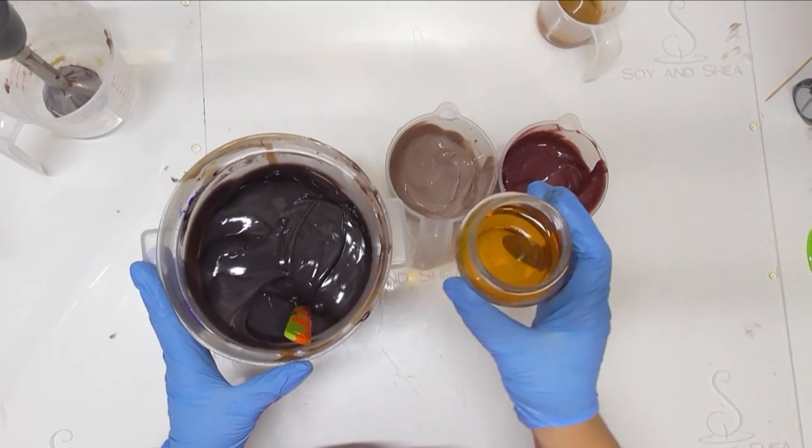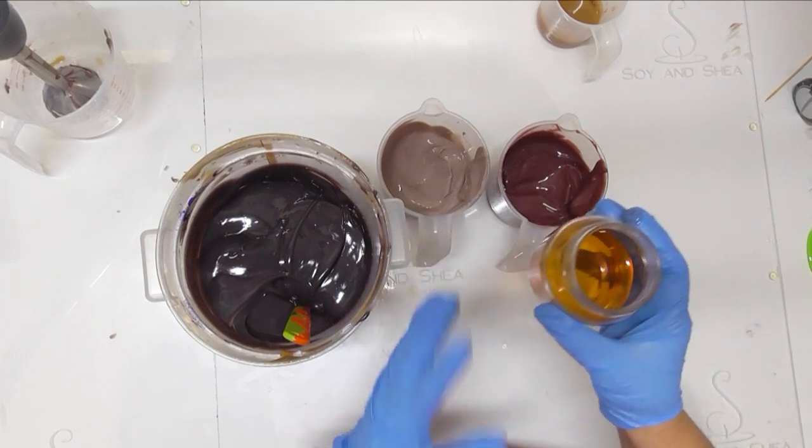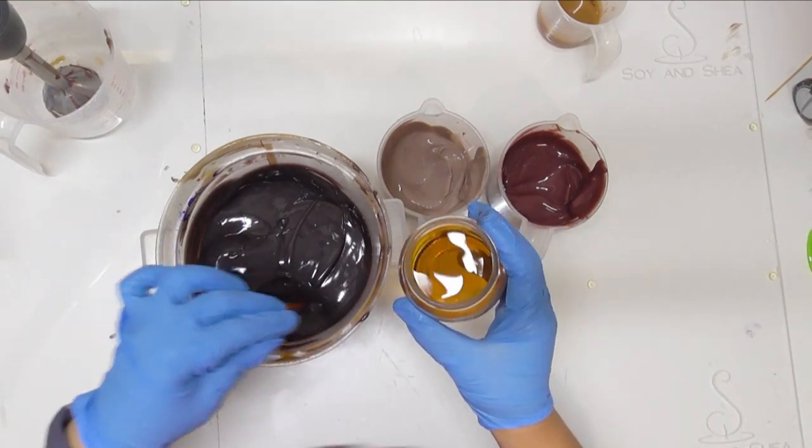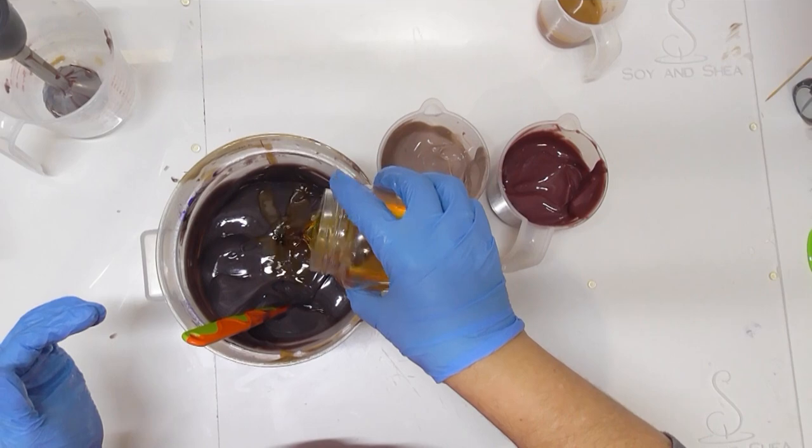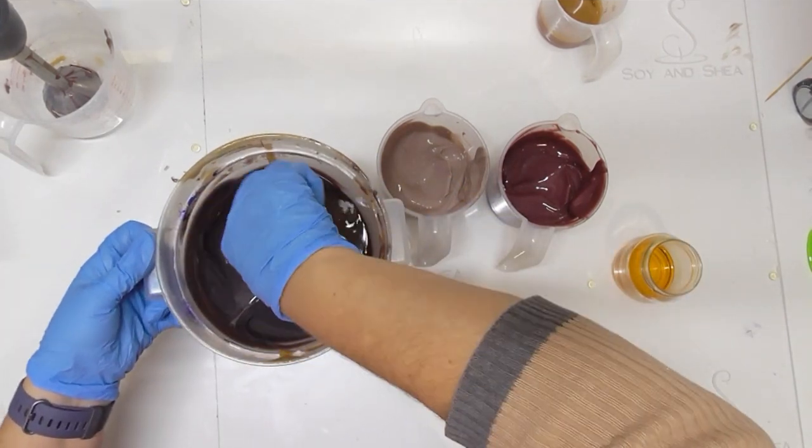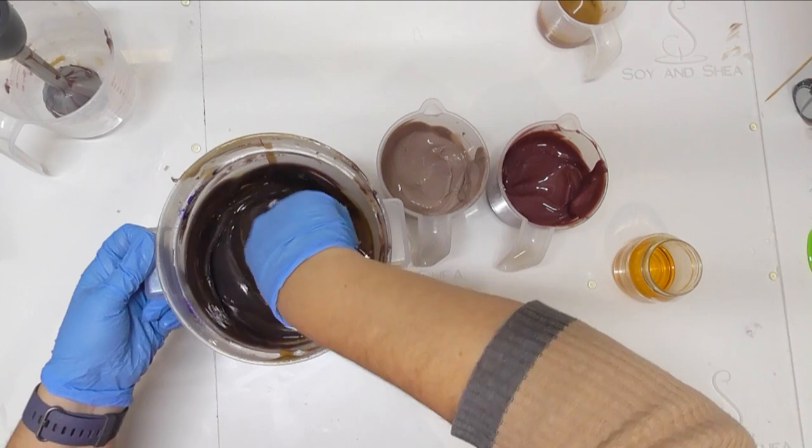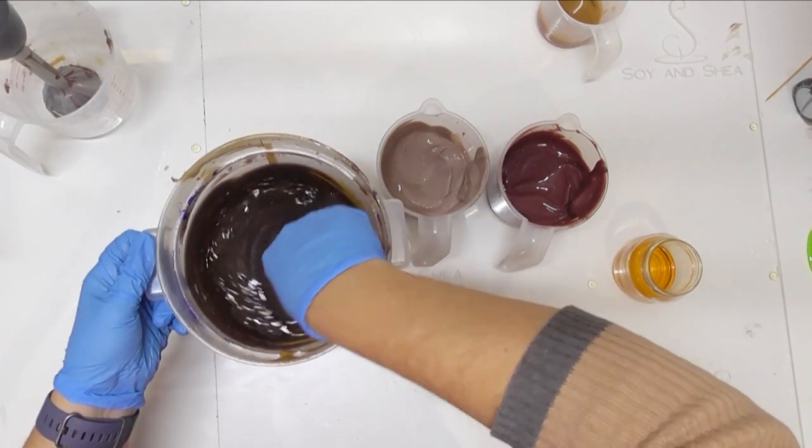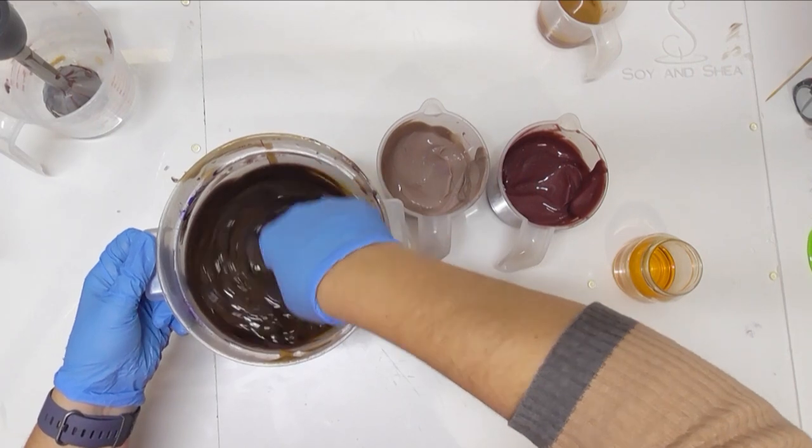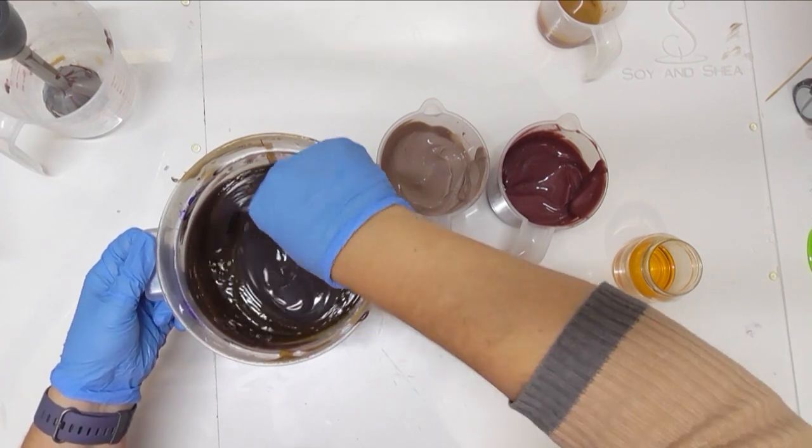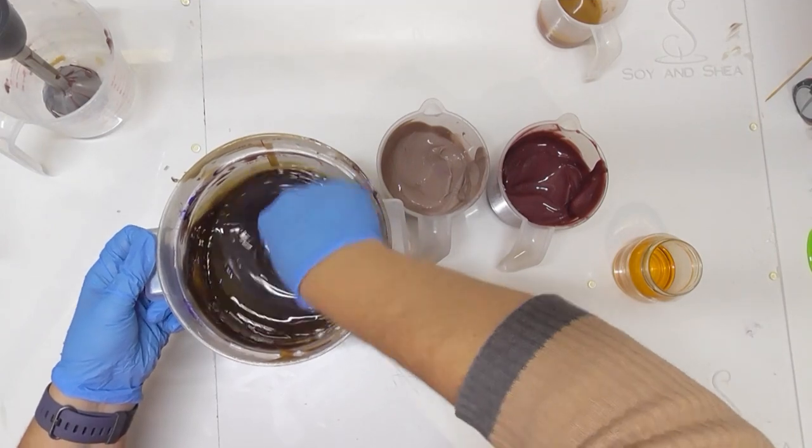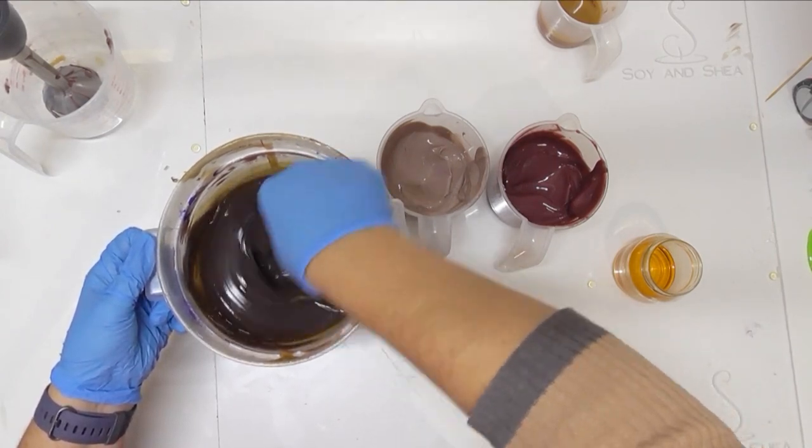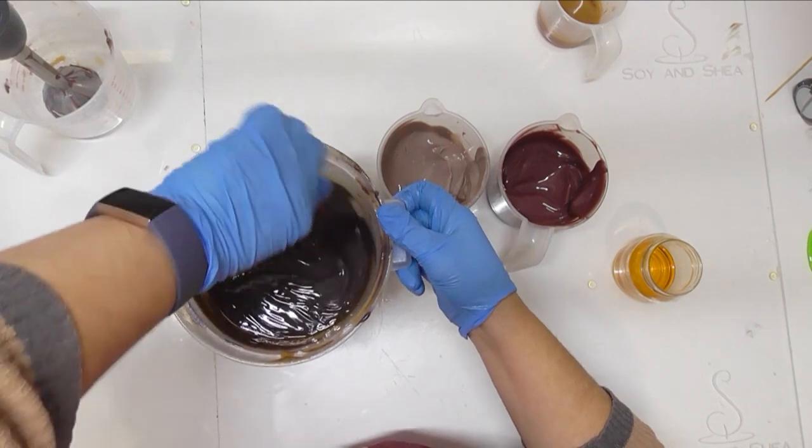This is one of those soaps that you really hope that your fragrance oil is going to behave itself. Today I am going to use Sonoma Sunset from Aroma. It's got notes of lime, lemon, grape, geranium, violet, and vanilla. It has only 0.52% vanillin, but it is quite a dark fragrance oil. I'm not too bothered if it does darken these colors up because I think it will just really enhance those purples.